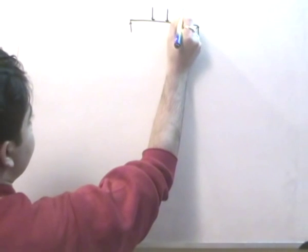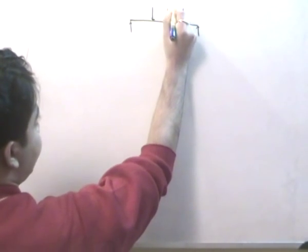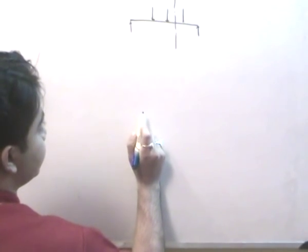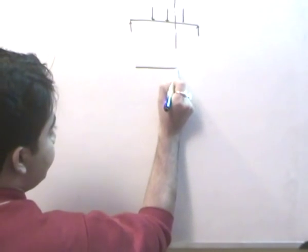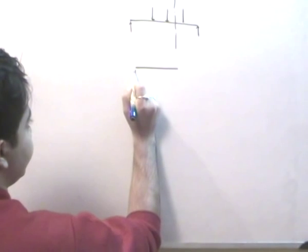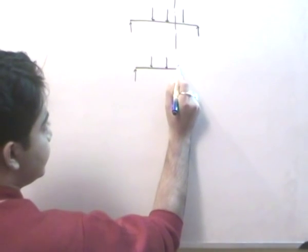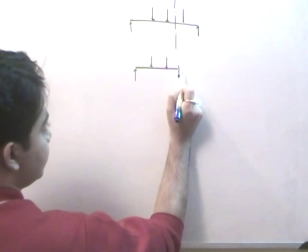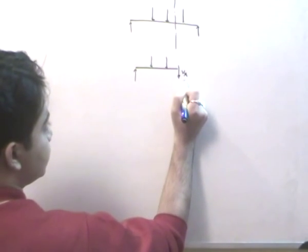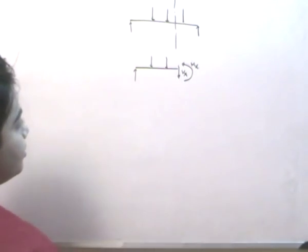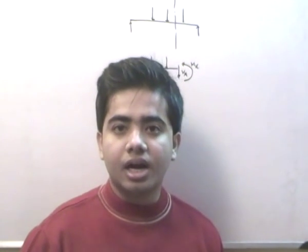The beam is loaded by forces, and I cut a section of the beam. Representing it as a free body diagram, there are two external forces, and at this section there are two internal forces: V(x), which represents the shear force, and M(x), which represents the bending moment.